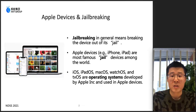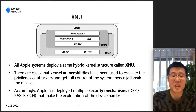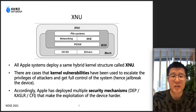In general, jailbreaking means breaking the device out of its jail. The goal of a successful jailbreaking is getting full control of the device. Apple devices are the most famous jailbroken devices in the world. iOS, iPadOS, and macOS are operating systems developed by Apple. All Apple devices deploy the same hybrid kernel structure called XNU. There are cases where kernel vulnerabilities have been used to escalate privilege and get full control of the system.